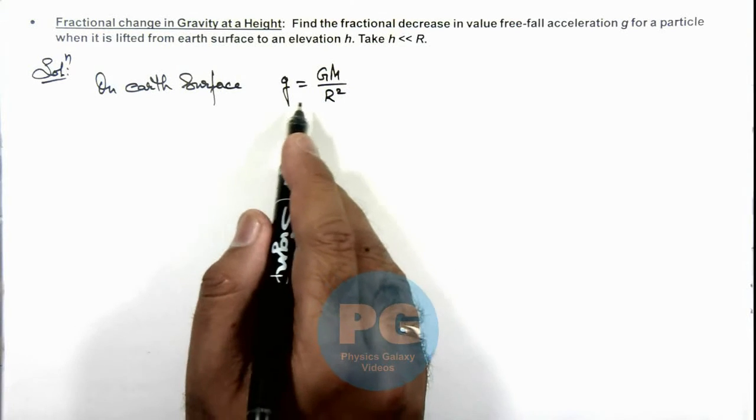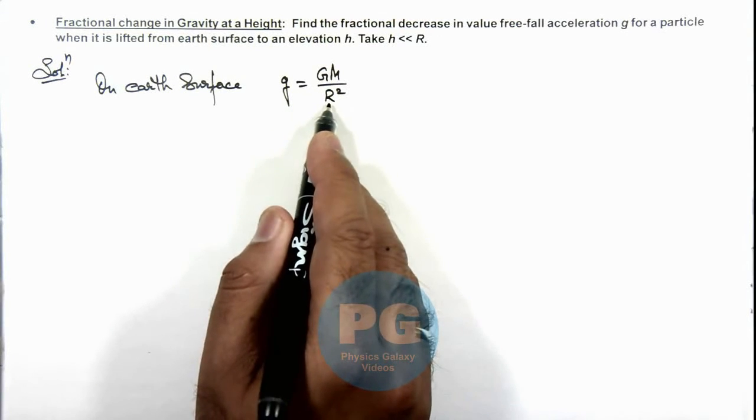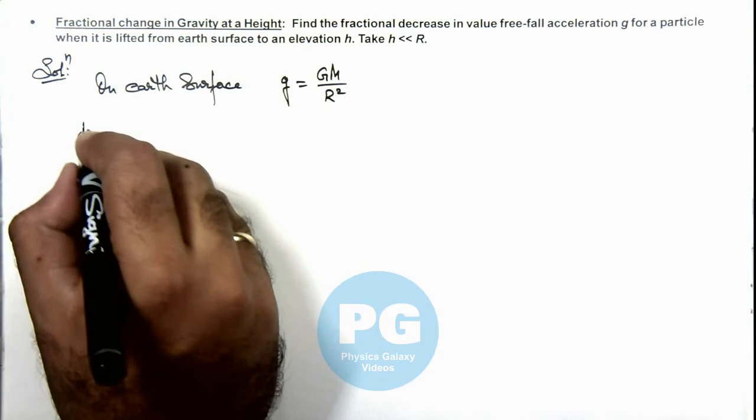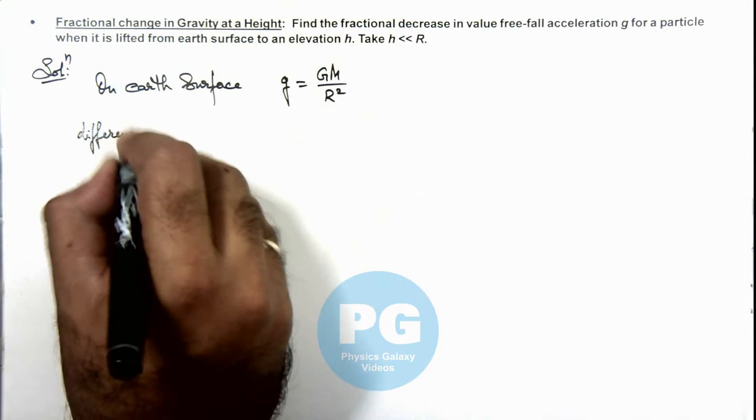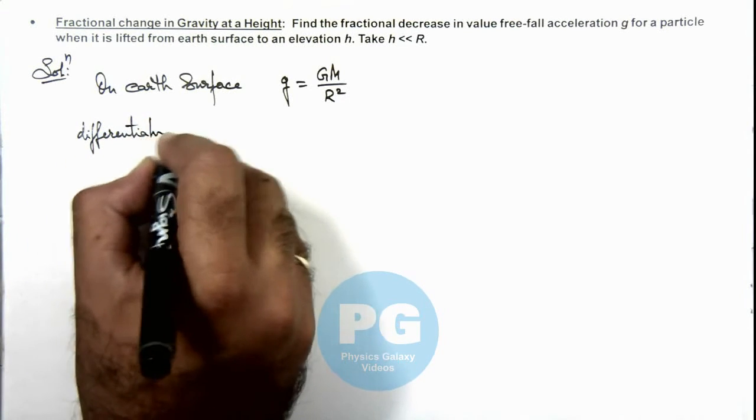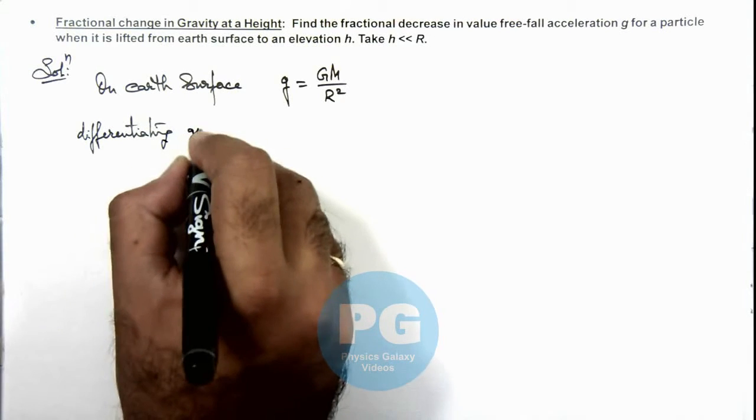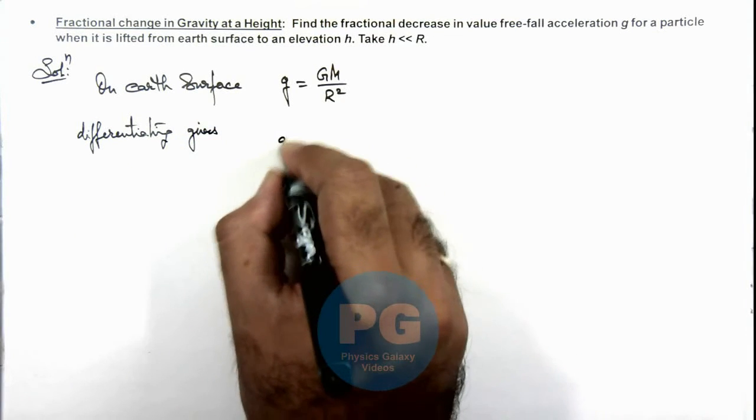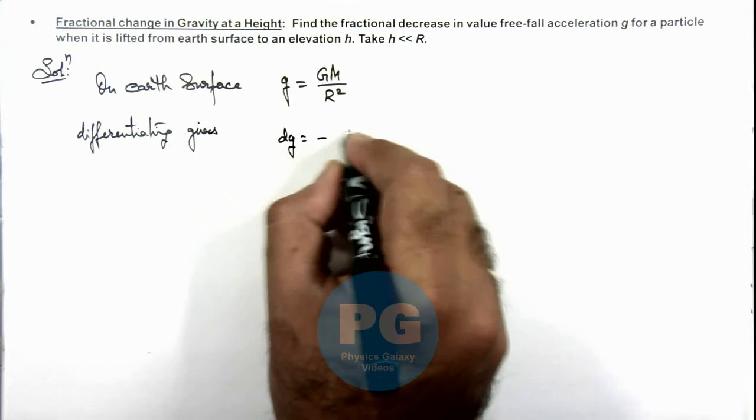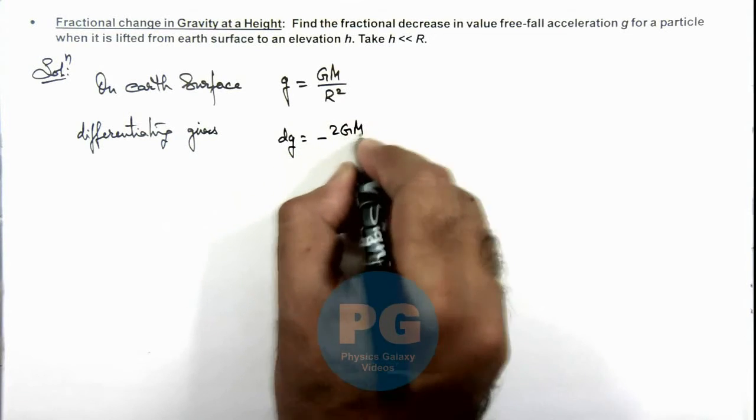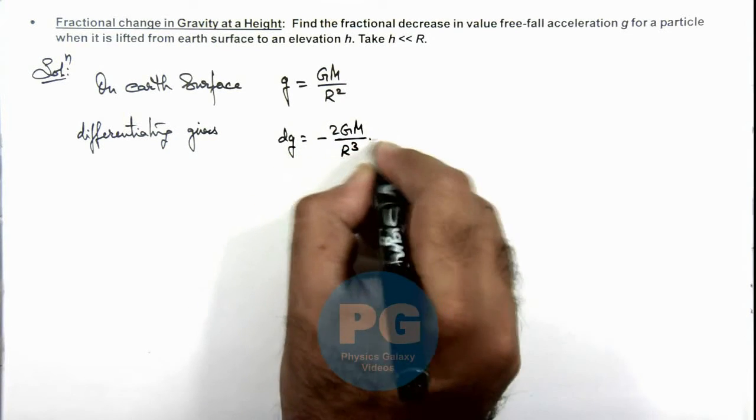So for slight change in the value of r, we can differentiate this expression. So differentiating gives the value of dg is equal to minus 2GM by r cube, multiplied by dr.